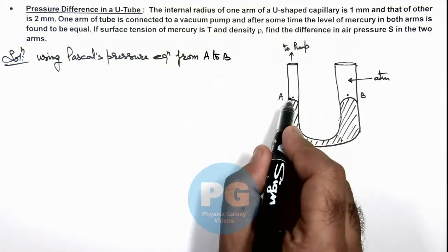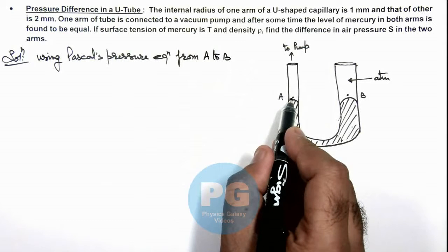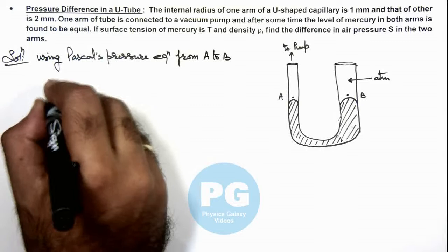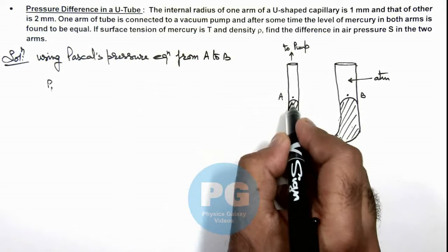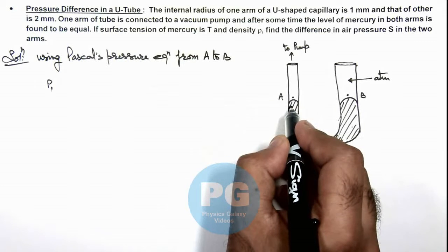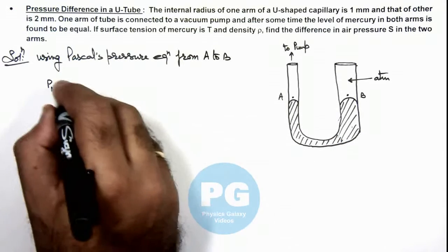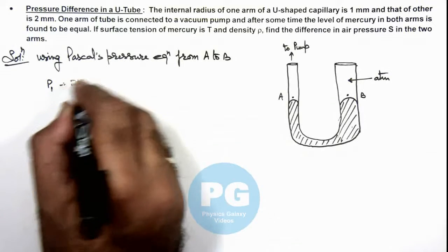Here we can see at point A, if pressure is taken to be P₁, then the pressure inside the meniscus of tube A we can write, this will be plus 2T by R₁.